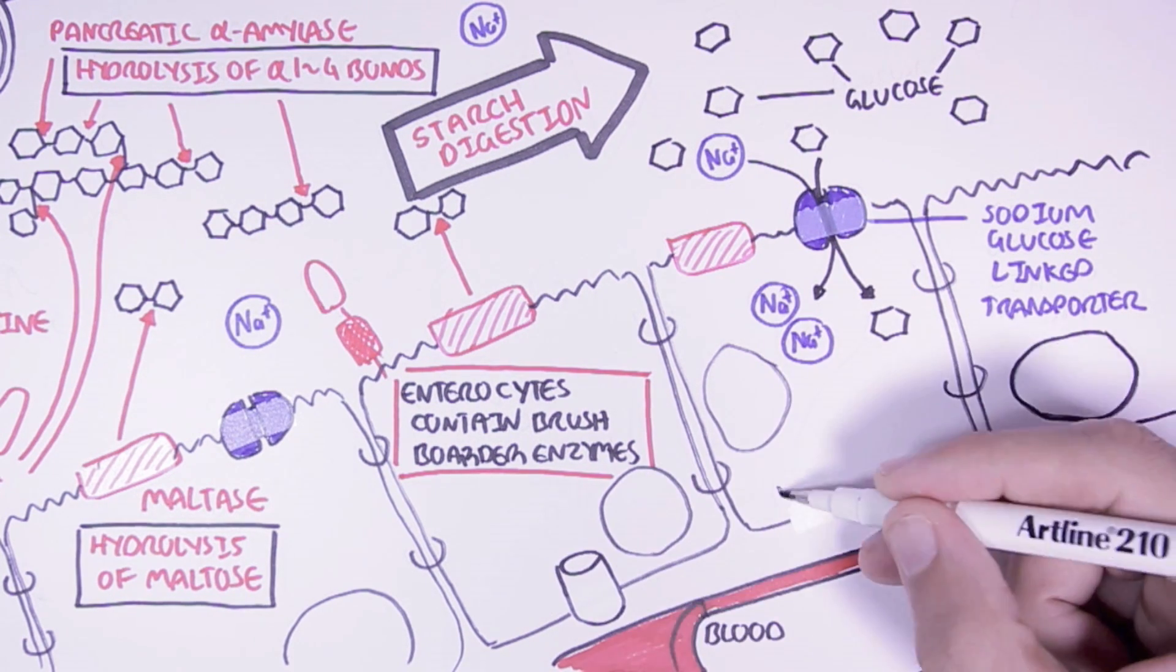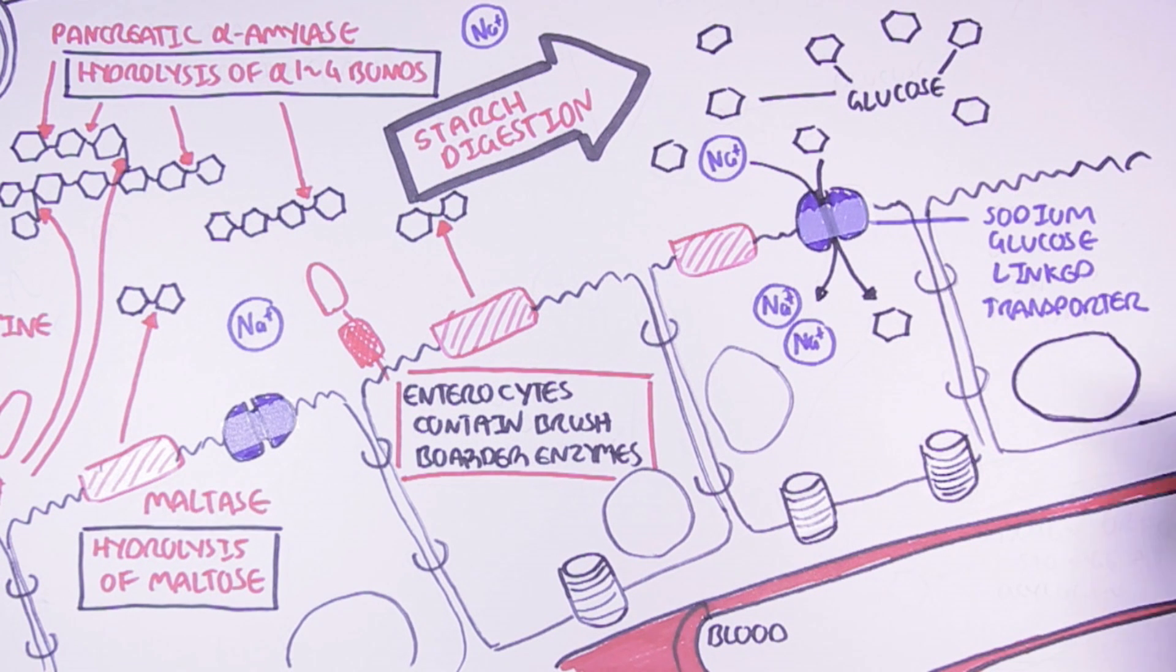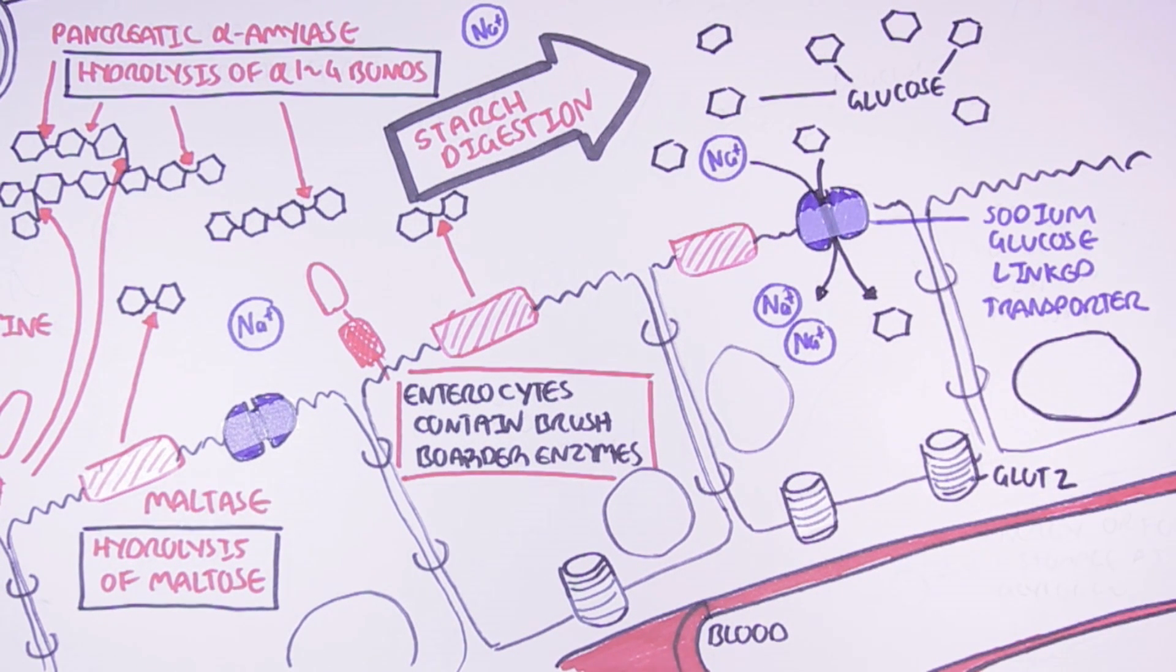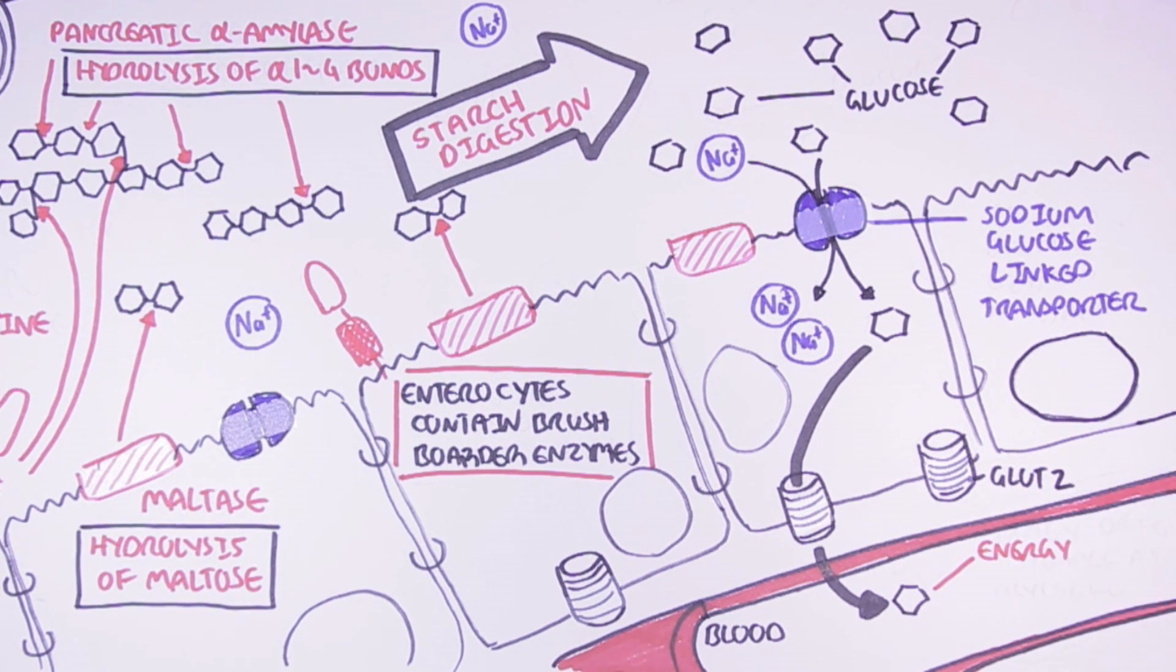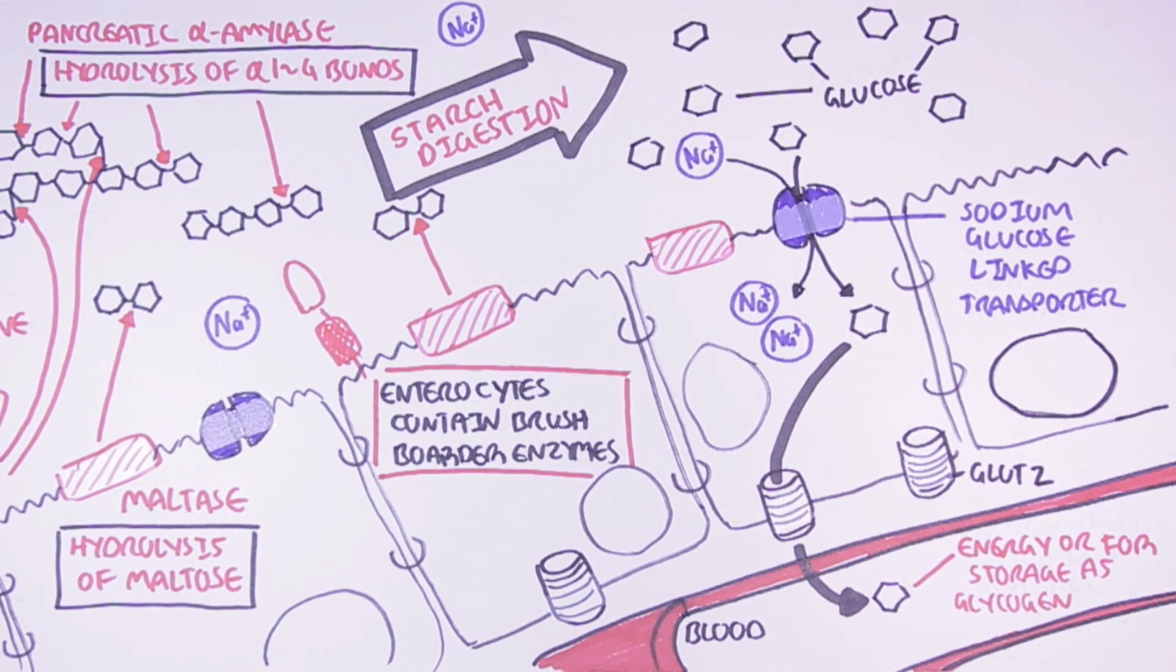Once glucose is within the cell, it can be reabsorbed by the bloodstream through a GLUT2 transporter. The GLUT2 transporter is found on the basal surface of the enterocyte. When glucose is in the bloodstream, it will increase blood glucose levels. The glucose can be used as energy by tissues, or it can be stored away in the liver as glycogen.